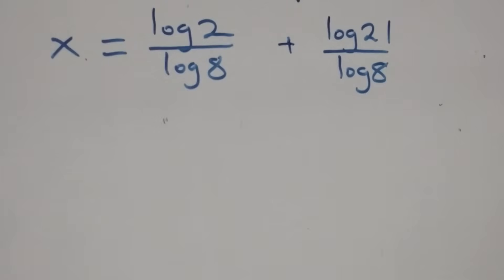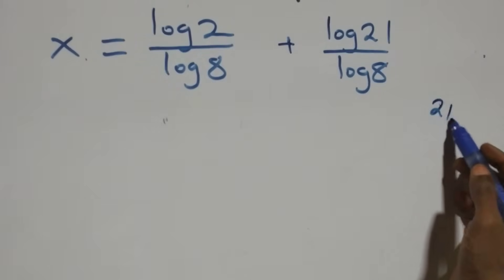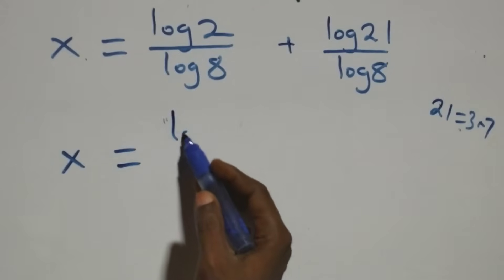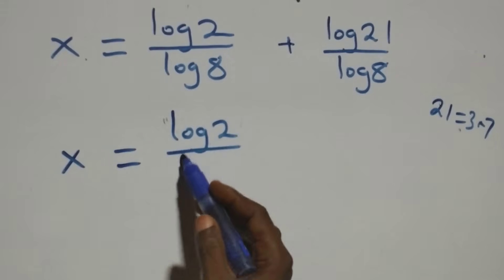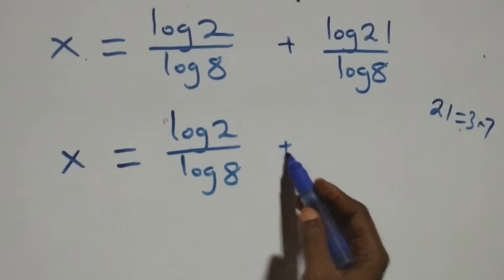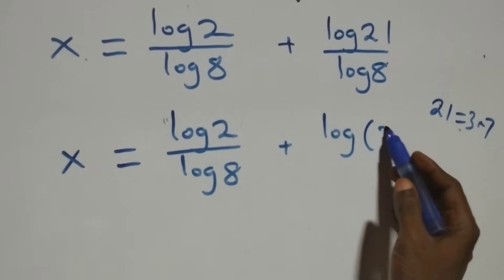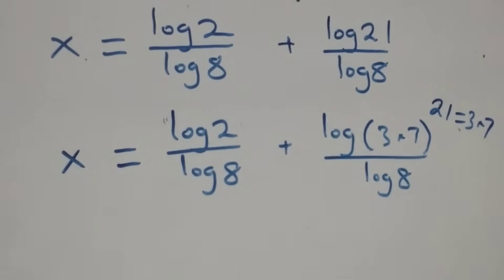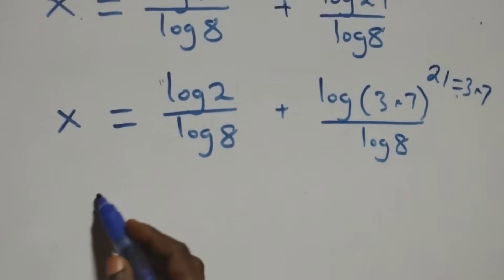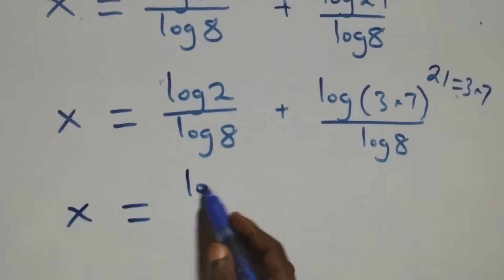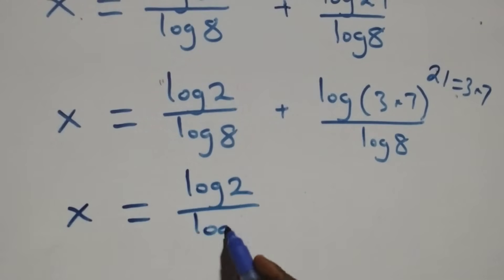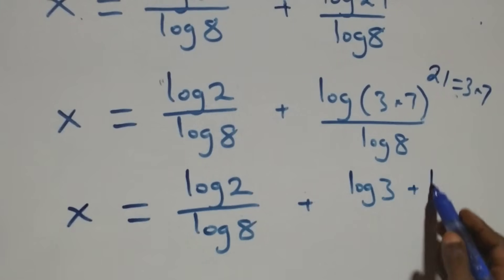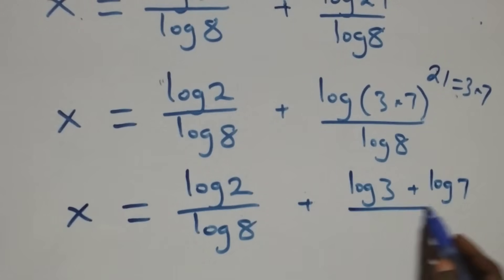We can also write 21 as 3 times 7. So all we have becomes x equals log 2 over log 8, plus log of 3 times 7 over log 8. Applying the product law again gives x equals log 2 over log 8, plus log 3 plus log 7, over log 8.